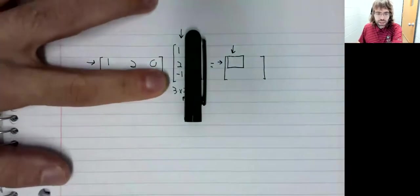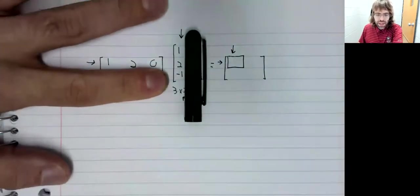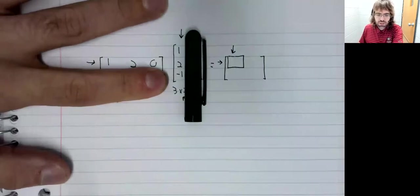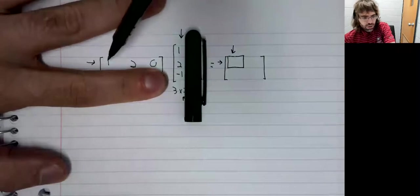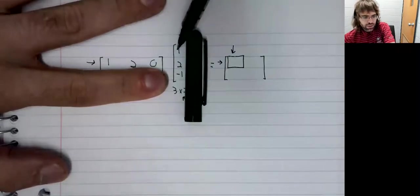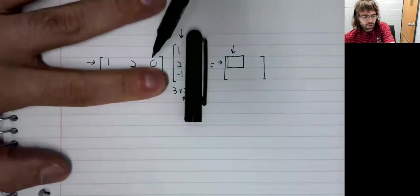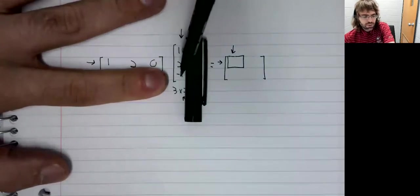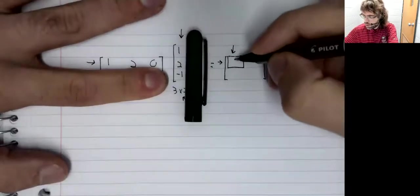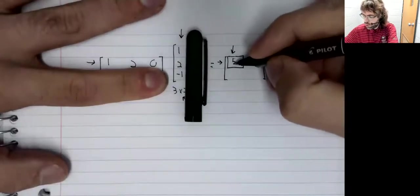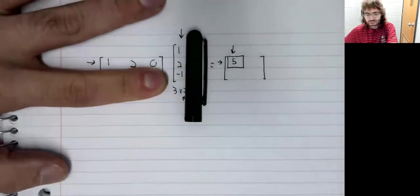And now we'll multiply and add just like we did with a matrix times a vector. One times one is one. Two times two is four. Zero times negative one is zero. One plus four is five.